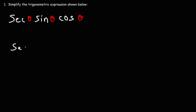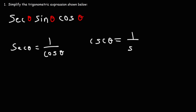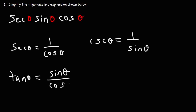The first formulas are the reciprocal identities. Secant is equal to 1 over cosine theta, and cosecant theta is equal to 1 over sine theta. You also need to know that tangent is equal to sine theta divided by cosine theta, and cotangent theta is equal to cosine over sine.